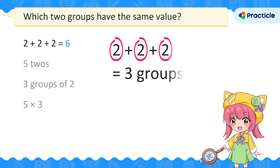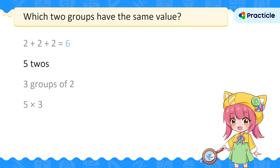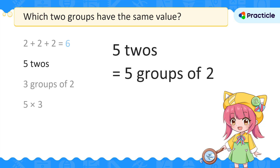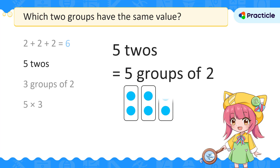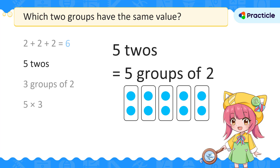What about the next one? What does 5 twos look like? Well, 5 twos means that we have 5 groups of 2. This is the same as 2 plus 2 plus 2 plus 2 plus 2, or 5 times 2. What answer do we get? If you said 10, good job!